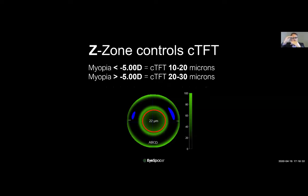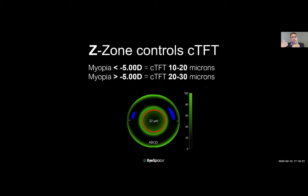There is a safe range, a range where it's too close, and a range where it's too far from the cornea. By default, stay with whatever iSpace calculates when you optimize. Only troubleshoot if needed — for instance, if you see central staining, go back with a second lens and increase the Z-zone, increasing the central tear film thickness to allow more reserved space in the center.